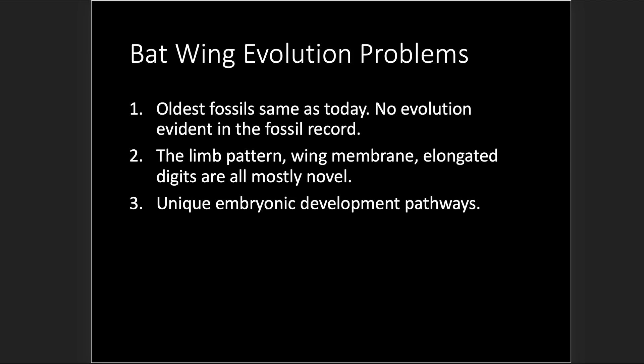So we're already running into some problems. First, the oldest fossils are the same as today — no evolution is evident in the fossil record; what we're seeing is stasis. Number two, the limb pattern, wing membrane, and elongated digits are all mostly novel. And three, there are unique embryonic development pathways — we'll see more of this.